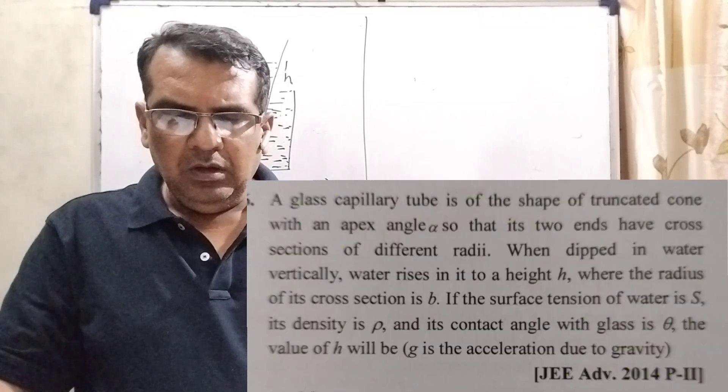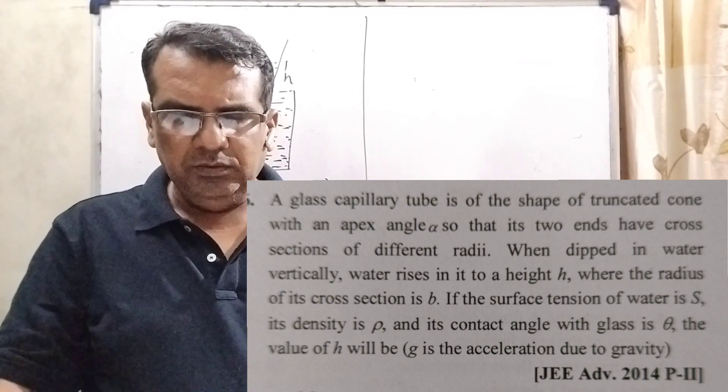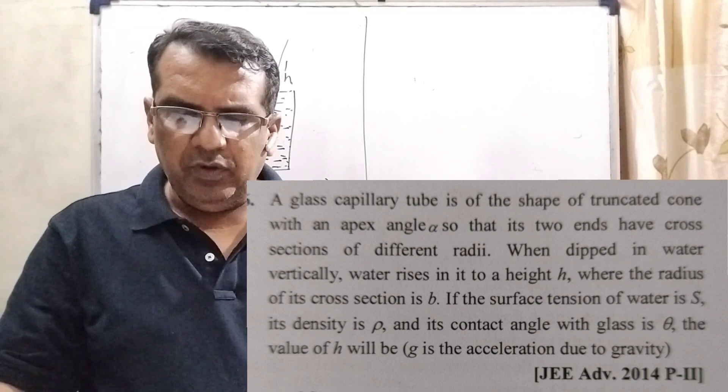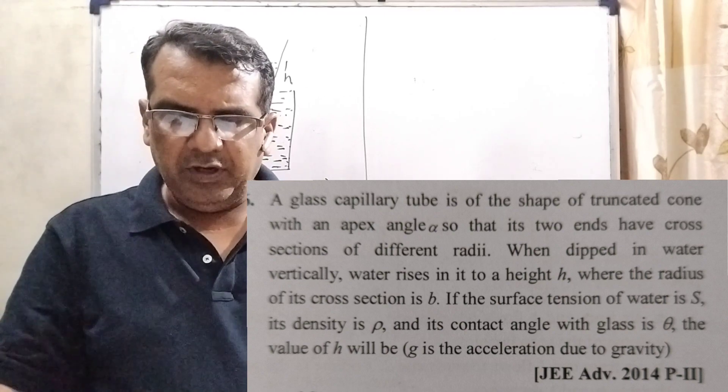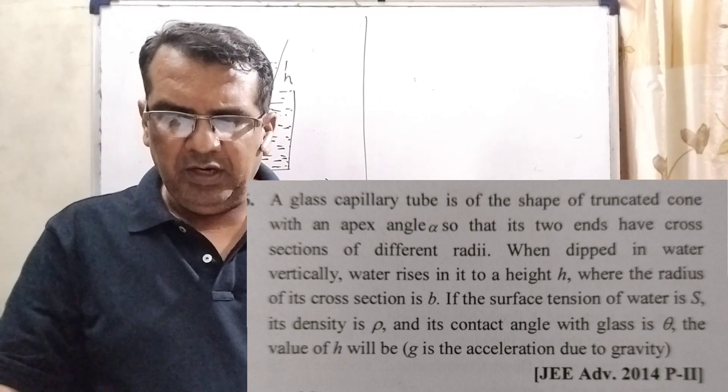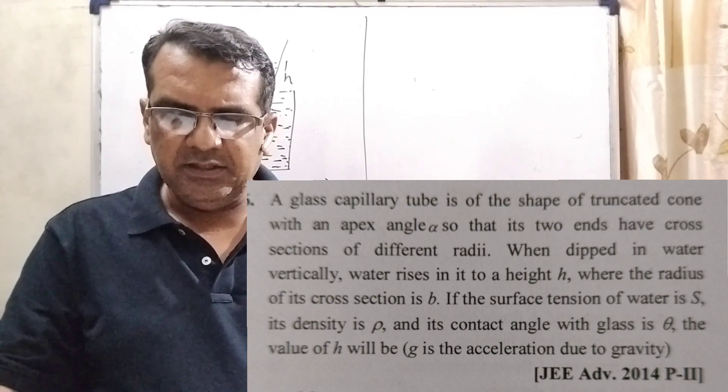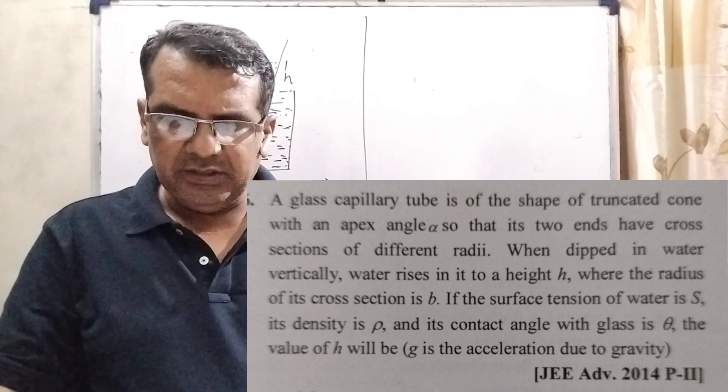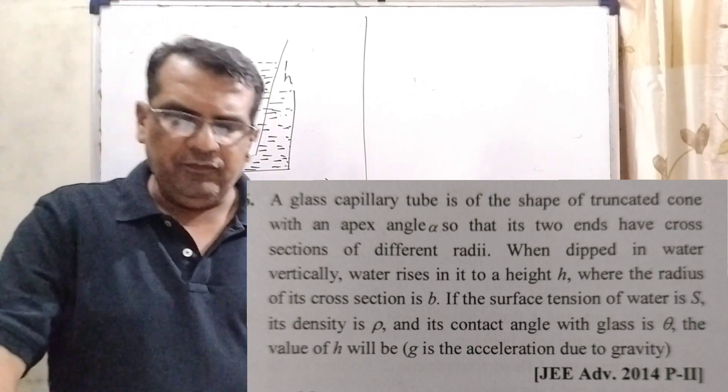Here is the question. A glass capillary tube is of the shape of truncated cone with an apex angle alpha, so that its two ends have cross sections of different radii. When dipped in water vertically, water rises in it to a height h, where the radius of its cross section is b. If the surface tension of water is s, its density is rho and its contact angle with glass is theta, the value of h will be.